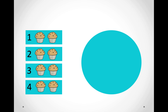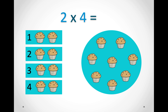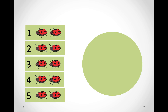In this picture we have two muffins in each group and we have four groups. So we will say two times four. Now we can count them all: two, four, six, eight. So we know two times four equals eight.